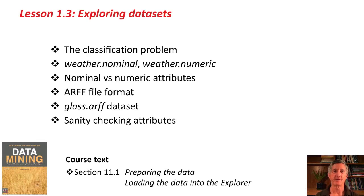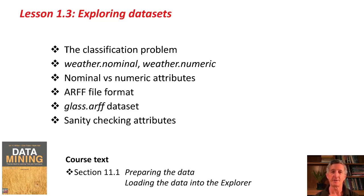That's it. We've looked in this lesson at the classification problem. We've looked at the nominal weather data and the numeric weather data, and talked about nominal versus numeric attributes. We've talked about the ARFF file format and looked at the glass.arff dataset. I've talked about sanity checking of attributes and the importance of getting down and dirty with your data. For further background, go to section 11.1 of the text, and please go and do the activity associated with this lesson. Bye!